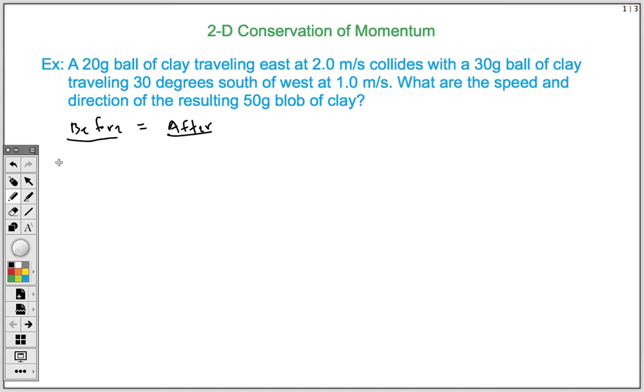So beforehand, we have our 20-gram ball of clay traveling east. I'm just going to label that 20. Then we have our 30-gram ball of clay traveling 30 degrees south of west, where our angle measurement of 30 degrees is right here. That's our angle theta.